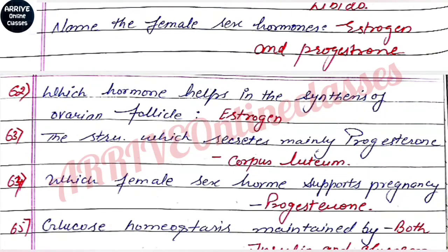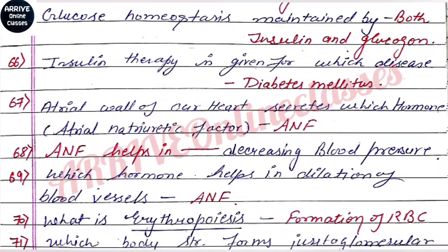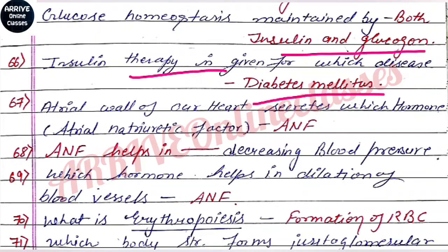The female hormone taken during pregnancy is progesterone. Glucose homeostasis is maintained by both insulin and glucagon — homeostasis means maintaining balance of blood sugar level. Insulin therapy is given for Diabetes Mellitus.